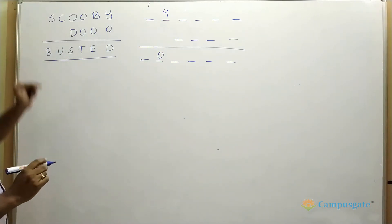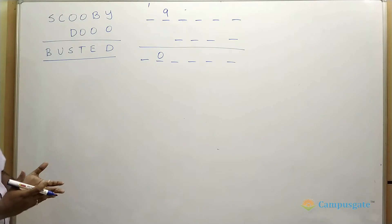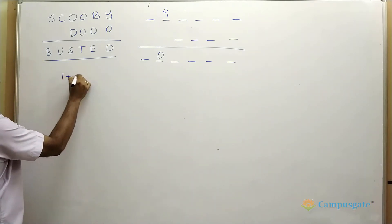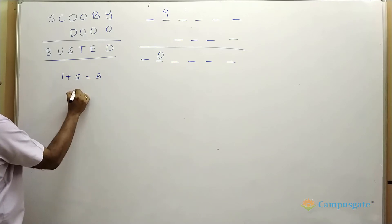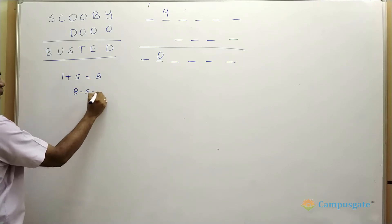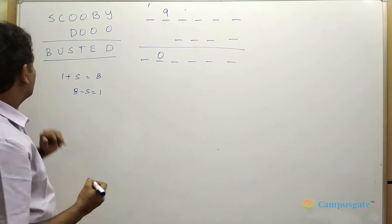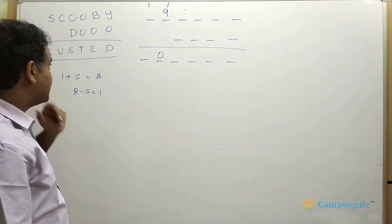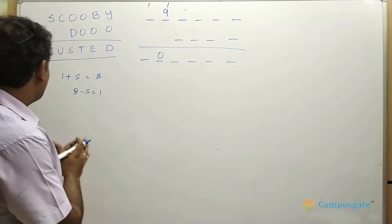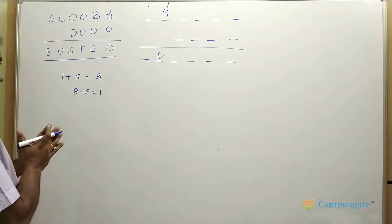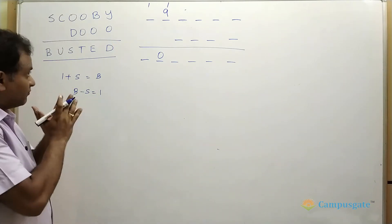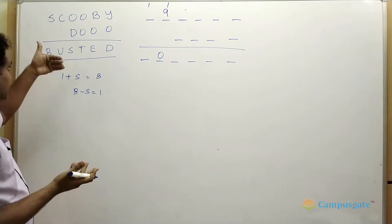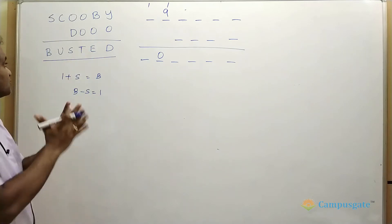That means S and B are consecutive numbers, so one plus S equals B, or B minus S equals one. There is also a carry-over here, since nine plus one equals ten. For this kind of question, you look at which alphabet is repeating the most. In this question, O is repeating almost five times, so the best approach is to start by assuming O equals one.